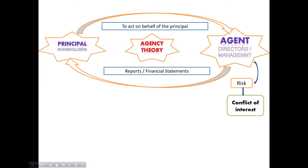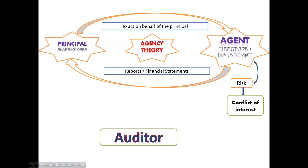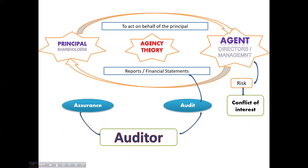Because of this risk, the principal appoints an auditor and requests the auditor to audit the financial statements or other information and provide assurance about whether those reports give a true and fair view or not. The auditor then conducts the audit based on criteria such as International Standards on Auditing, and based on audit evidence, provides assurance to the principal. That assurance might be positive or might not be.